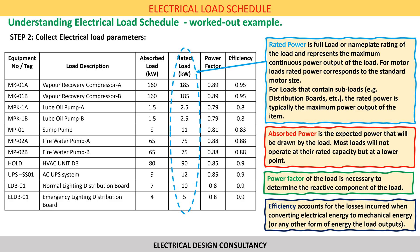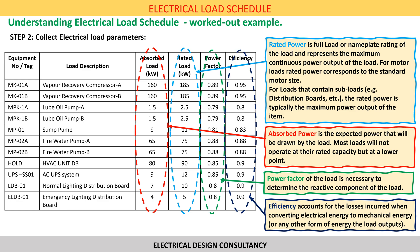Absorbed power is the expected power that will be drawn by the load. Most loads will not operate at rated capacity but at a lower point. For motor loads, absorbed power is based on the mechanical power output to the shaft of the driven equipment at its duty point. The motor is typically sized so that the rated capacity exceeds the expected absorbed load by some conservative design margin. Where information regarding absorbed load is not available, a load factor of between 0.8 to 0.9 is normally applied.